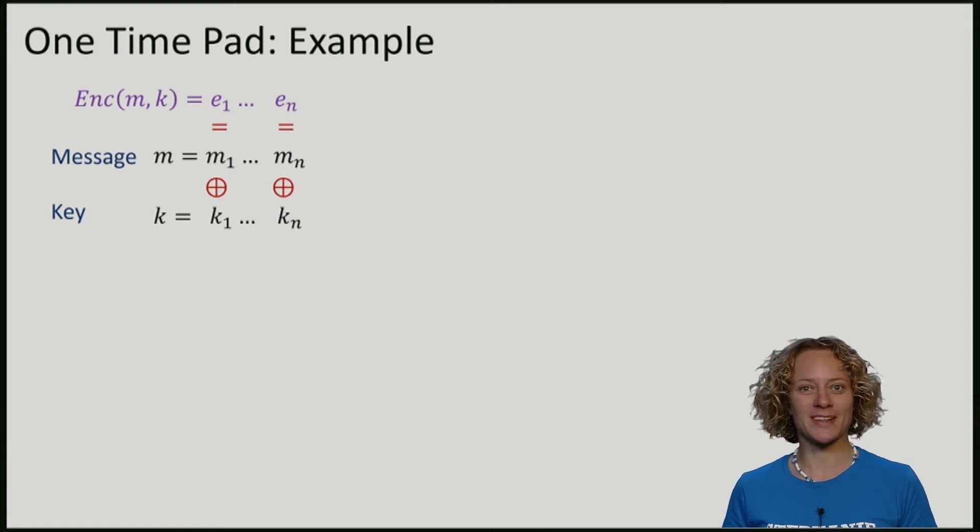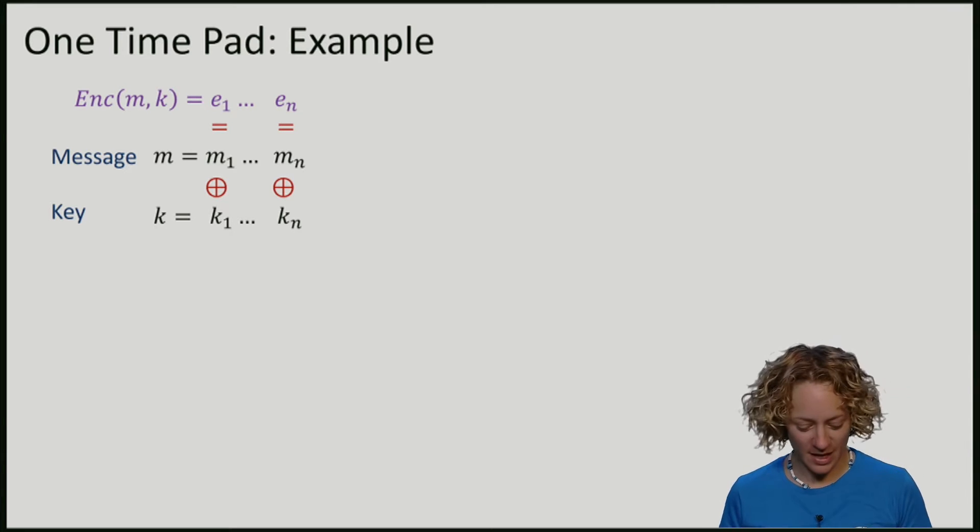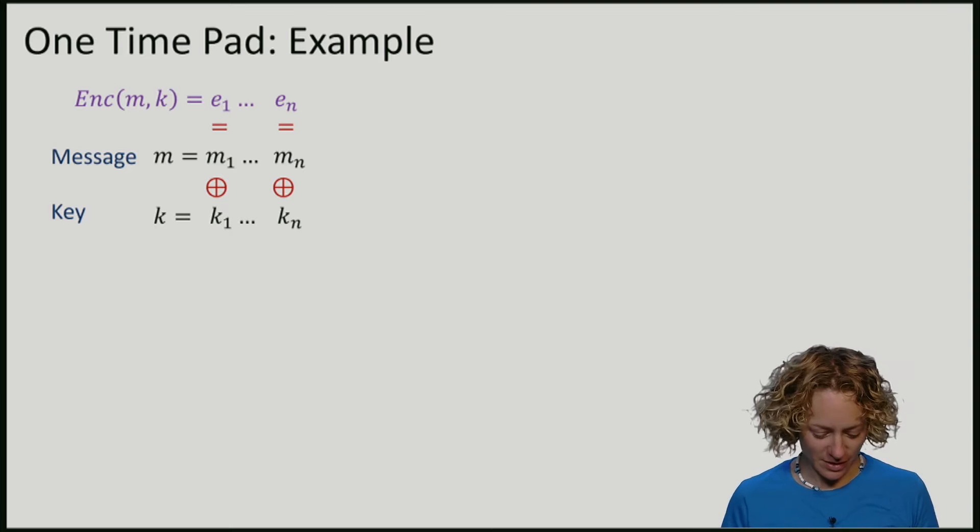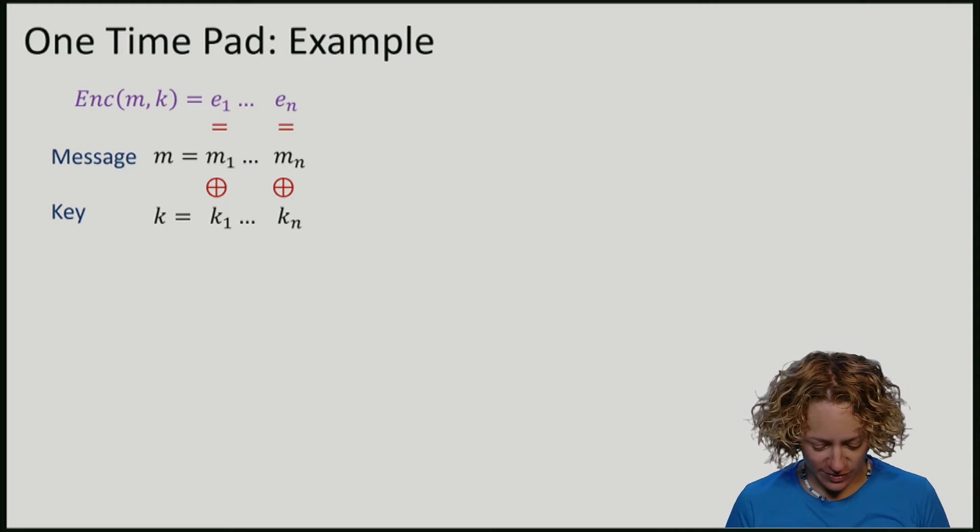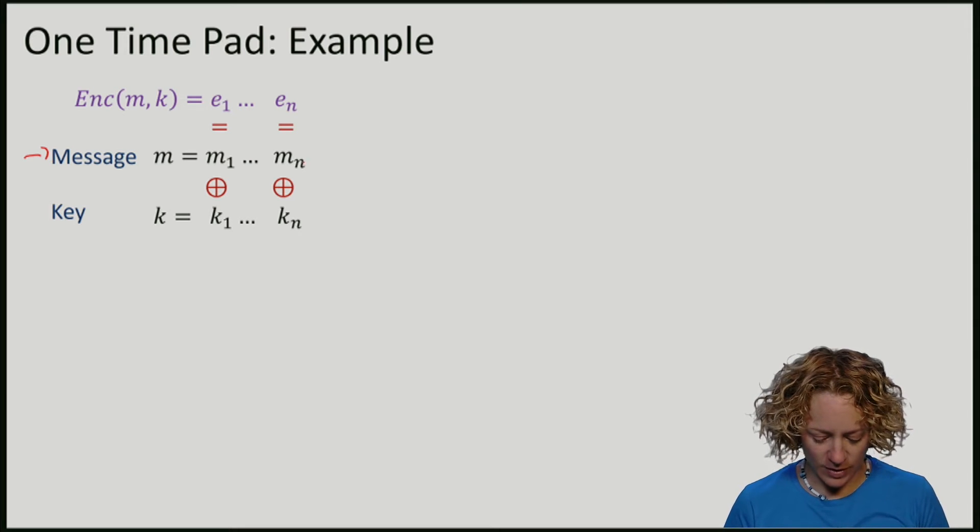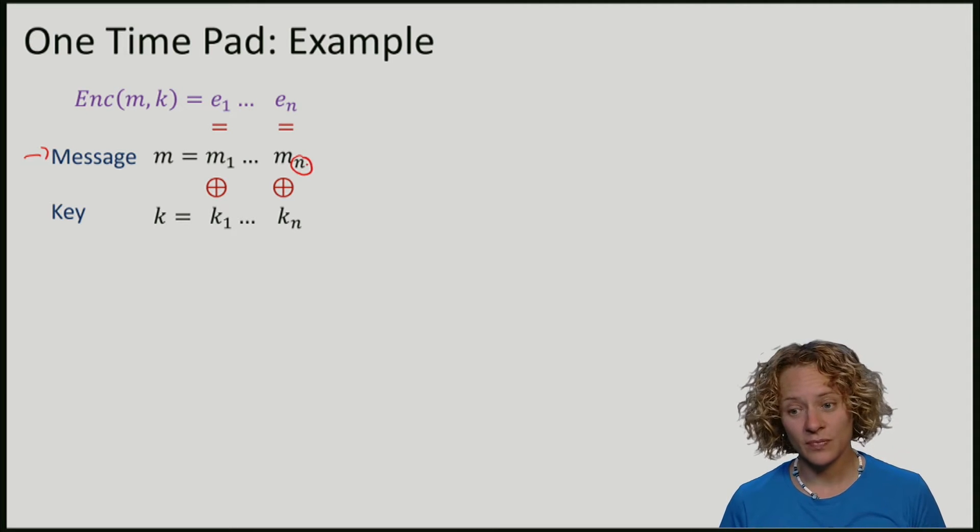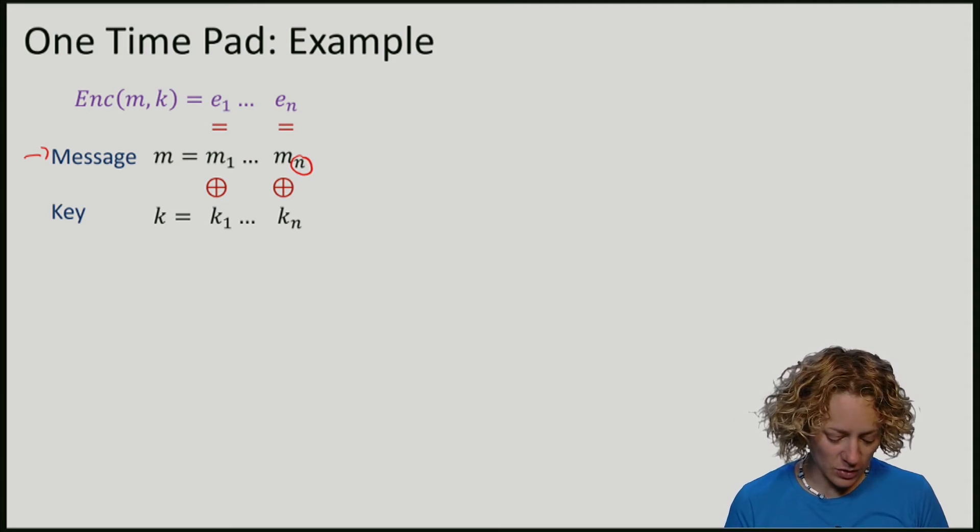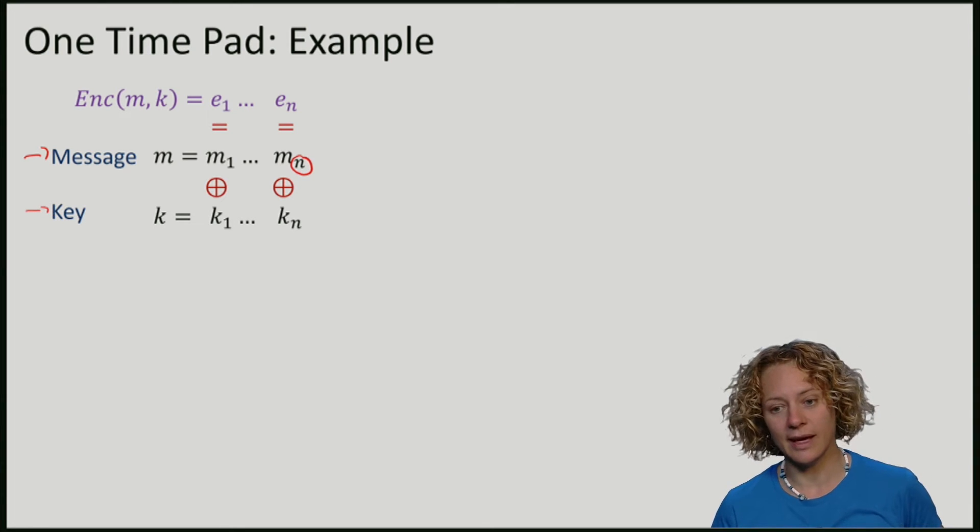Let us now consider some examples of how we can encrypt classical bits using the one-time pad. So let's remember what our encryption function was. We took the message m, consisting of n classical bits, and we XOR every bit of the message with the classical key k.